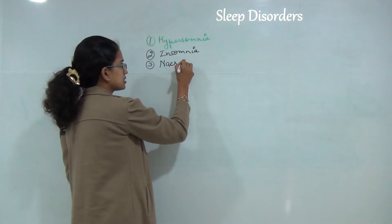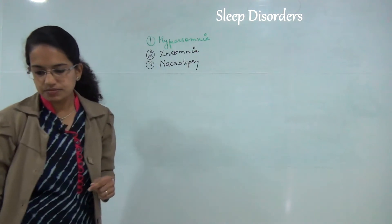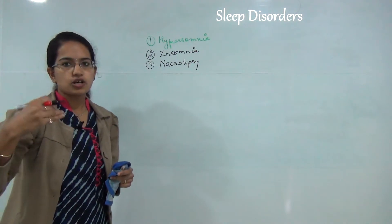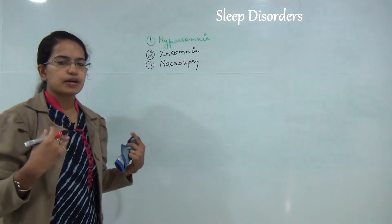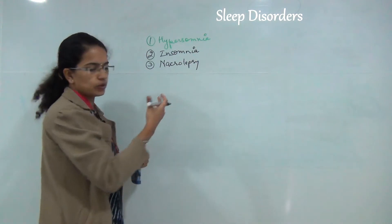Next is narcolepsy. Narcolepsy explains there is sudden onset of REM during periods of wakefulness. So suddenly a person might have a brief episode of sleep. That is narcolepsy.